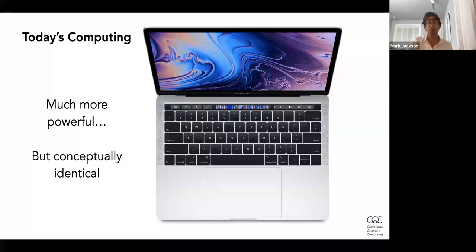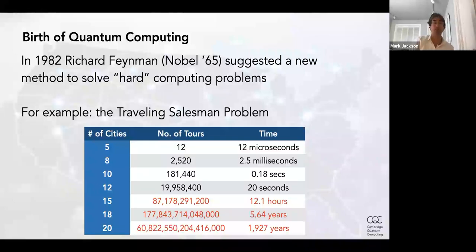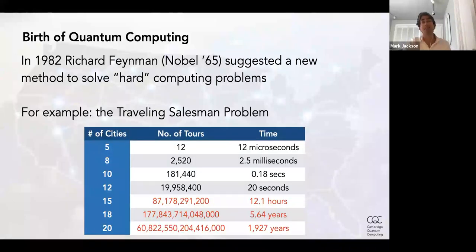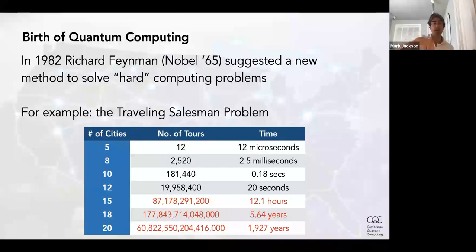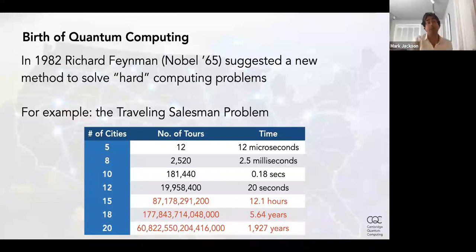Quantum computing represents the first real leap forward in how humans process information. The birth of quantum computing is usually given as 1982, when Nobel Prize-winning physicist Richard Feynman suggested there were certain problems normal computers would never be able to solve. An example is the Traveling Salesman Problem: given a list of cities and distances between them, find the shortest path that visits all of them. For a small number of cities, it's easy to do in your head.